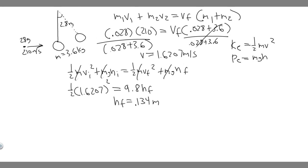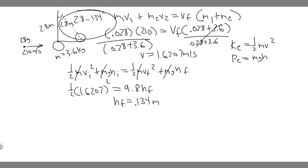Now we need to find the horizontal component, which is a bit trickier. Looking at the triangle formed: the hypotenuse is the string length of 2.8 meters. The adjacent side — the vertical distance from the pivot down to the pendulum's new position — is 2.8 minus 0.134, since the pendulum moved up 0.134 meters. We need to find the horizontal side, but first we need the angle.